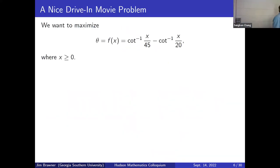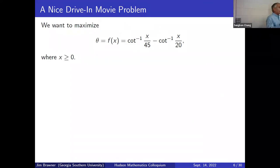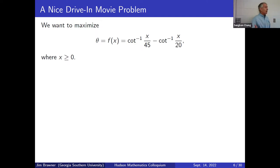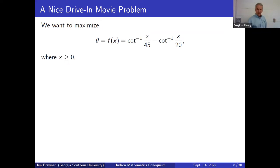Another advantage of this form is that we can now evaluate the function when x is zero — with x in the denominator that wouldn't be defined. In terms of the domain, x can be any non-negative number. At your drive-in theater there will be some boundary, but we'll assume you can go back as far as you want.